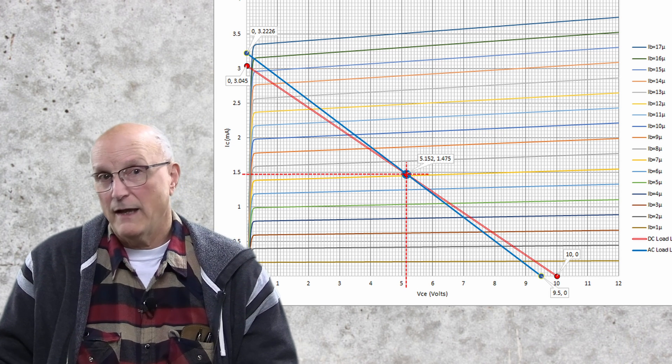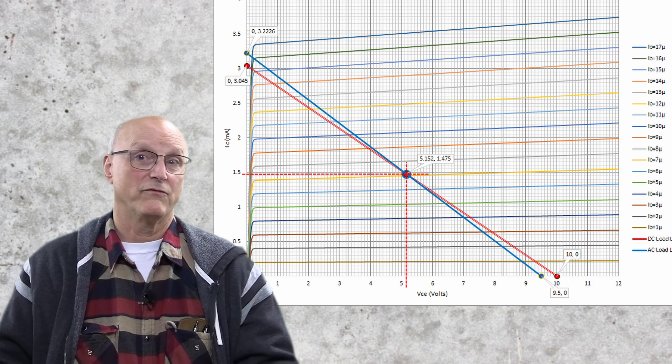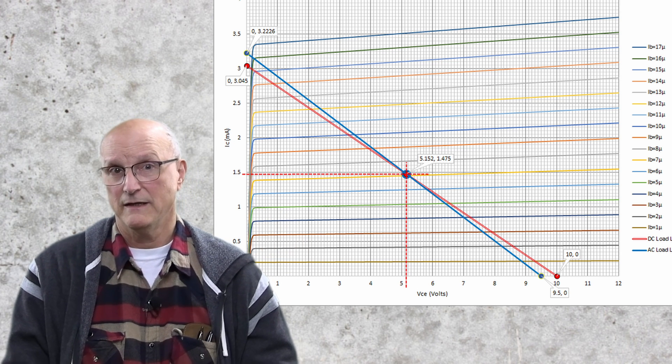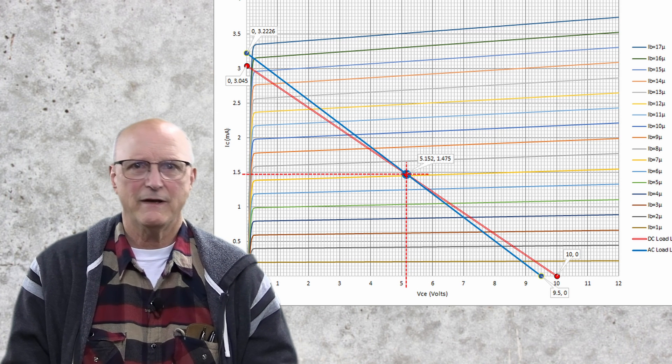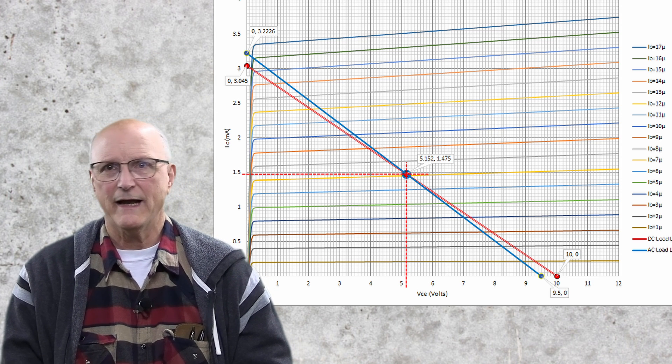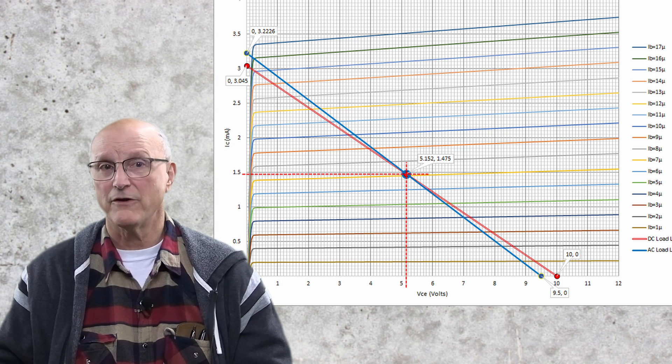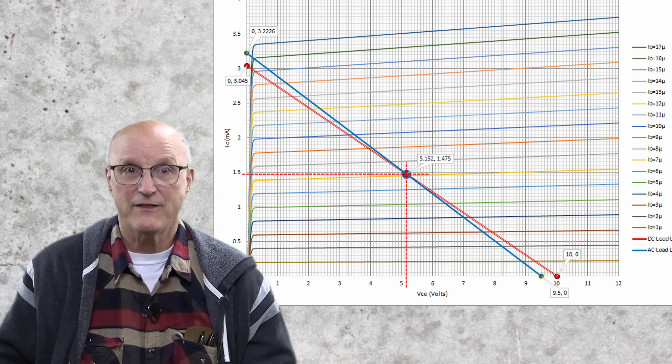In this particular case, VCE swings from about 4.08 volts to 6.4 volts. You can see that this process helps us discover the range of voltage swing available to us with this design.